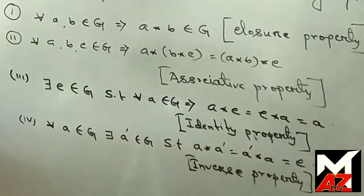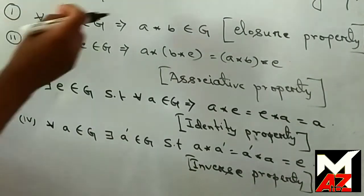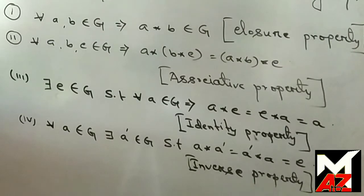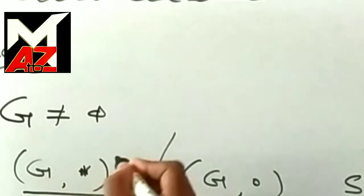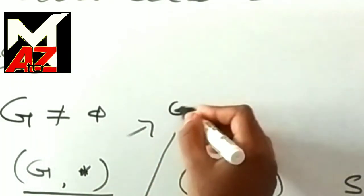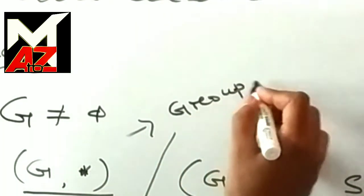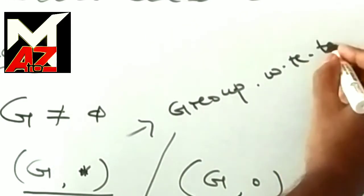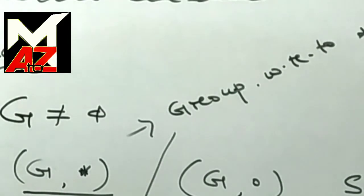If the algebraic structure G star follows all four properties, then we say that G star is a group with respect to the binary operation star.